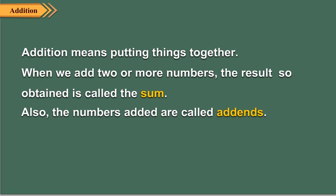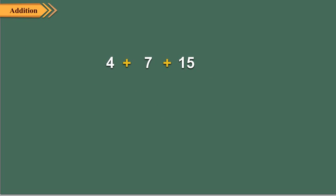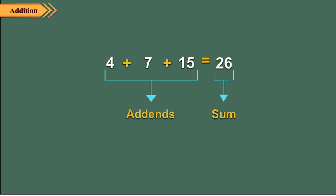For example, if we add 4, 7 and 15, we get 26, which is called the sum of 4, 7 and 15. Here, 4, 7 and 15 are called addends.